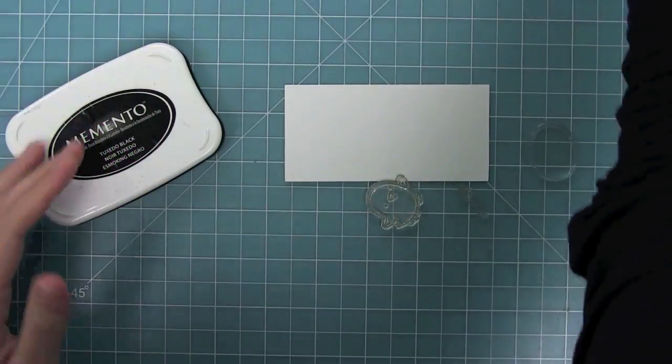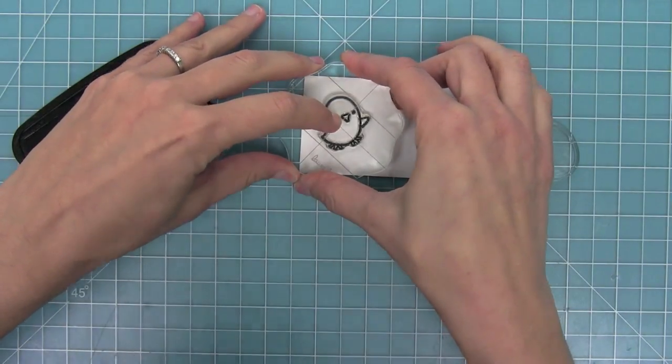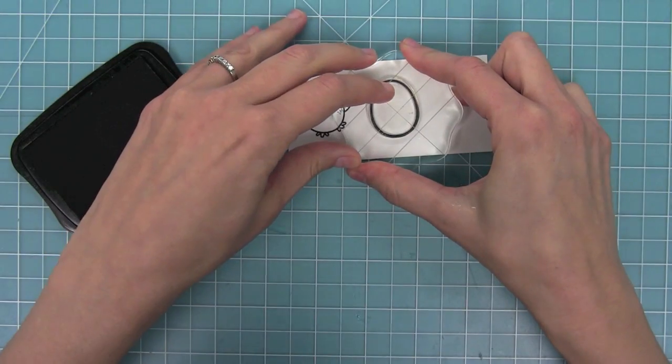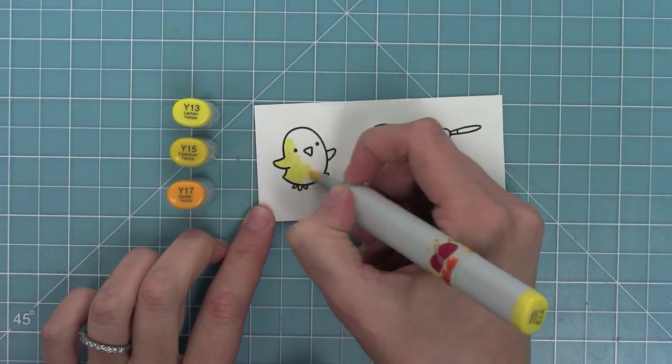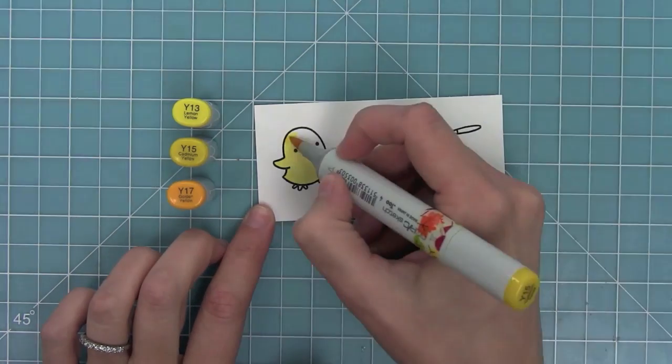Hello, it's Kelly Marie Alvarez here for Simon Says Stamp, and I'm going to be making an Easter penny slider card today. First, I'm stamping out some super cute images from Lawn Fawn's new Chirpy Chirp Chirp stamp set, and I'm going to be using my Copic markers to color them in.